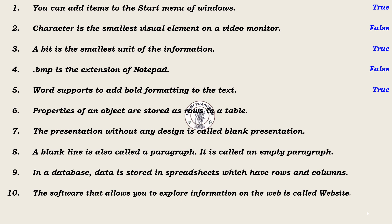6. Properties of an object are stored as rows in a table. False – properties are shown as a column. 7. The presentation without any design is called blank presentation. True.